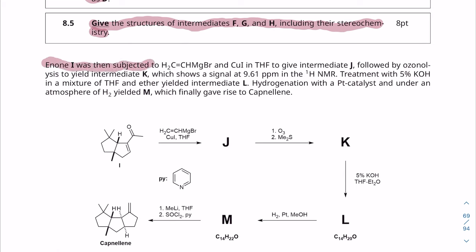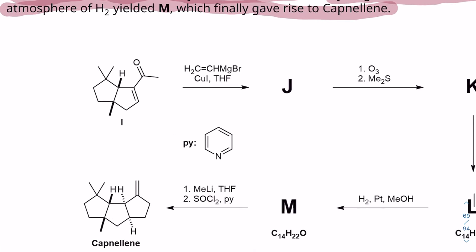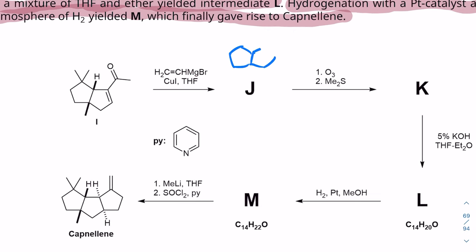Enone I was then subjected to vinyl magnesium bromide and copper iodide in THF to give intermediate J, followed by ozonolysis to yield intermediate K, which shows a signal at 9.61 ppm in the hydrogen NMR. So we have I, which is an unsaturated ketone, an alpha-beta-unsaturated ketone. We're reacting with vinyl magnesium bromide in the presence of copper 1. That is a standard conjugate addition. So this is a pretty simple question so far. We're going to add it over here, and the cascade of electrons is going to go like so. So we have a vinyl group off of there, and then don't forget to add the rest of the groups. Very important. There we go.